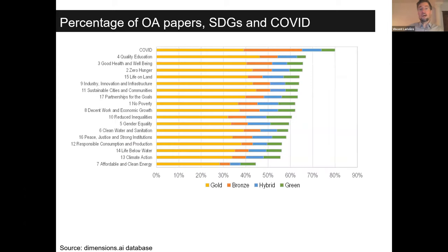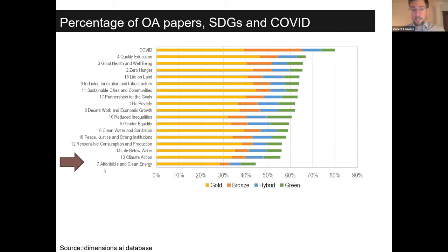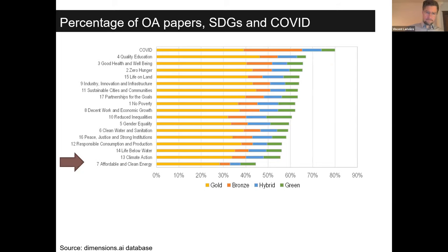If we break that down by SDG — still comparing to COVID which is around 80% open — climate action and clean energy are basically the SDGs with the lowest proportion of open access: slightly above 50% in the case of climate action and under 50% for affordable and clean energy. So again, a clear contrast between short-term emergencies and more long-term emergencies.